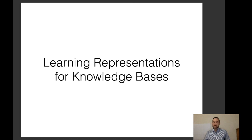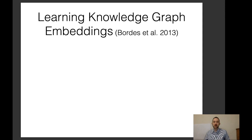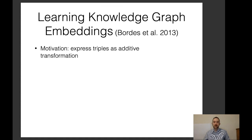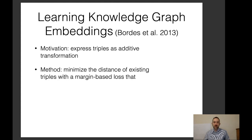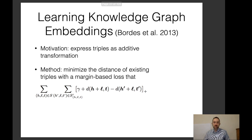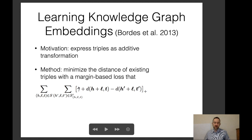The next topic is learning representations from knowledge bases. One very useful and broadly used method is learning knowledge graph embeddings — embeddings of entities or relations learned directly from a knowledge graph. The simplest way is expressing triples as additive transformations, minimizing the distance of existing triples with a margin-based loss that attempts to make existing triples closer than distractor false triples not actually in that relation.